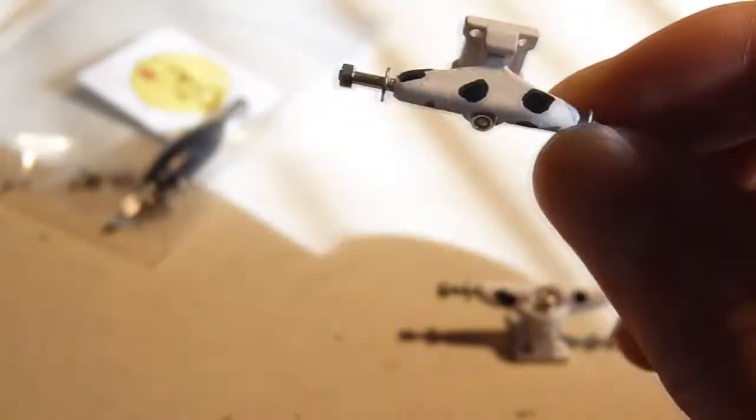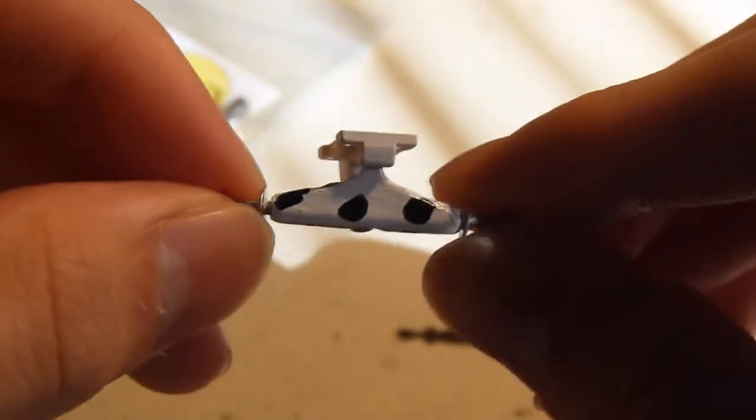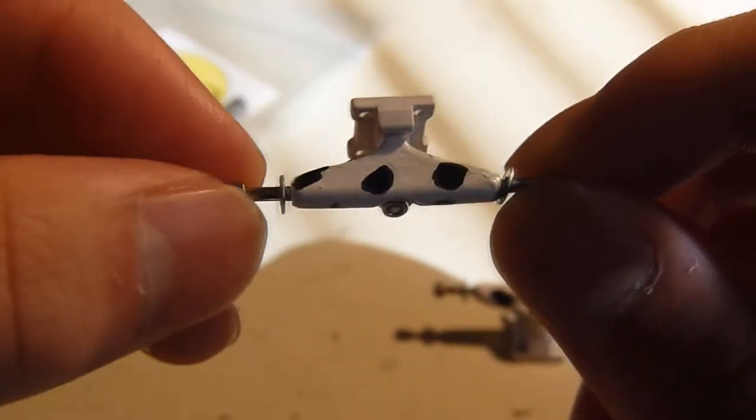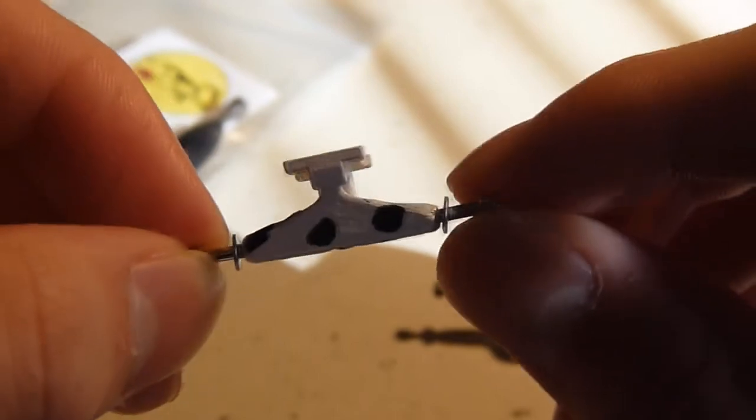So it's just like normal rex trucks except they just have a different pattern on it instead of just a normal chrome metal color.